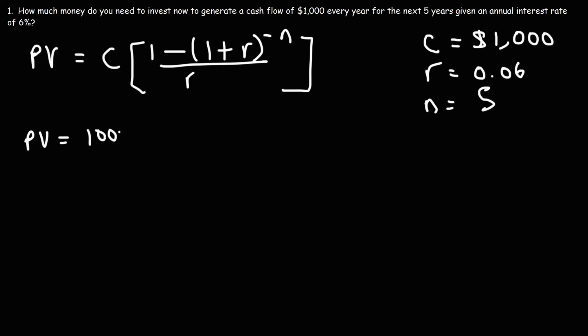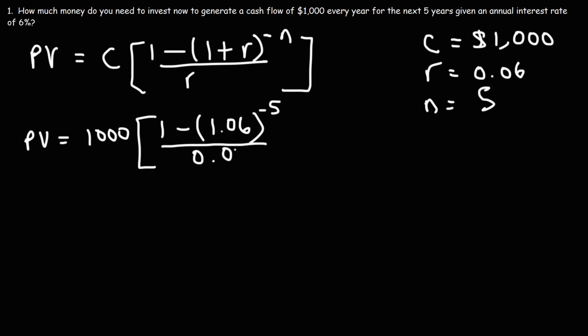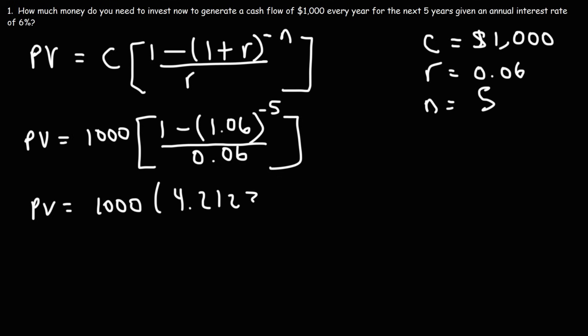So let's replace C with 1,000 and R with 0.06. So 1 plus 0.06 is 1.06, raised to the negative 5, divided by 0.06. 1 minus 1.06 raised to the negative 5 equals 0.2527418271. Dividing that by 0.06 gives 4.212363786. Multiplying by 1,000 gives us the present value.